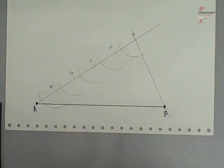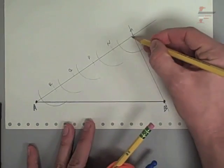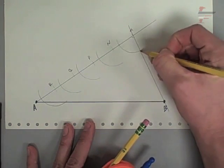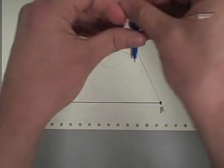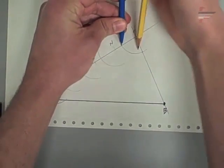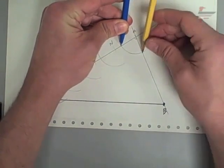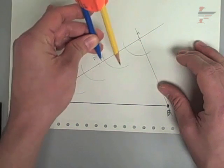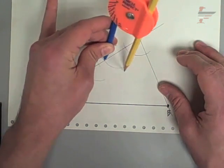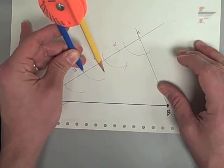So the way that you copy an angle, if we're copying this angle, I'm going to use these points as my reference. So measure out that distance. And then I'm going to slide down to the arc that I created.